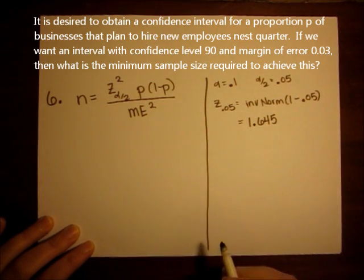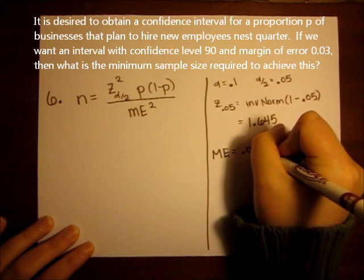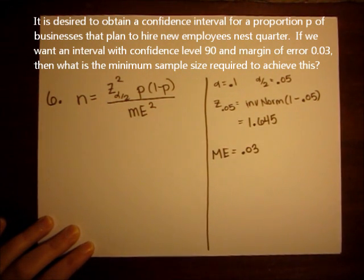If we read the question carefully, we're given the margin of error that we desire is 0.03, or 3%. We want to estimate P within 3%, and it doesn't give us a value of P to use.